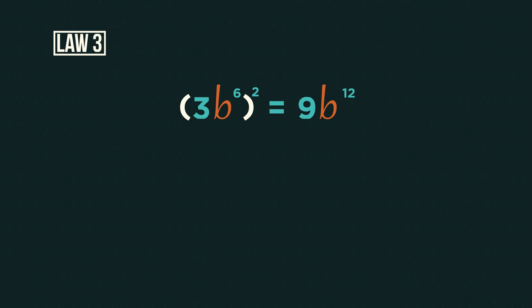If we wrote this out, it would be 3b⁶ multiplied by 3b⁶. And we know that when we multiply indices, we add the powers. So three multiplied by three is nine and six plus six is twelve. So just remember, when we raise a power to a power, we just multiply the two powers together.